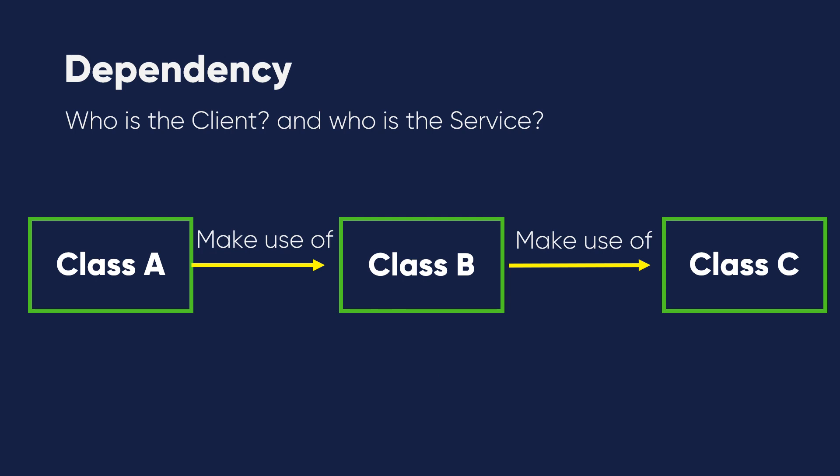Many people may be confused: how does this work if we have three classes or more? Who is the client and who is the service? If class A depends on B and B depends on C, then A is the client and B is the service. And class B is a client while class C is the service.